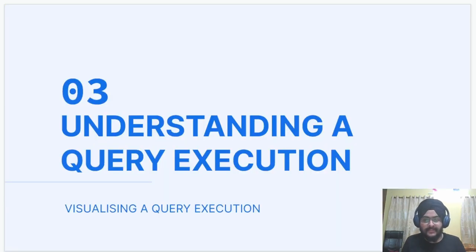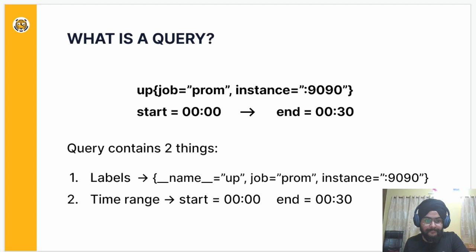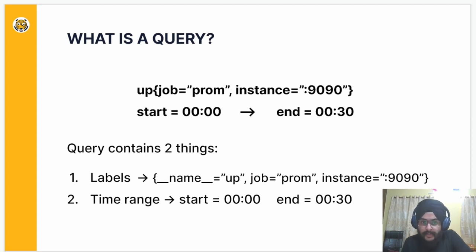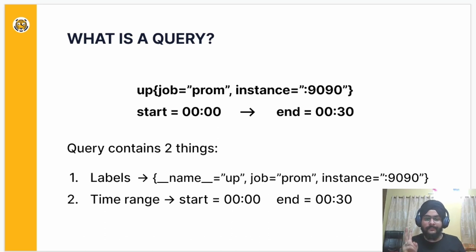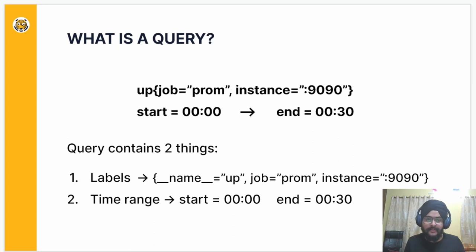Let's understand the query execution process on a very high level. What is a query? A query is formed of two things: labels and a time range. Over here, the labels are name equals up, job equals prom, and instance equals 9090.